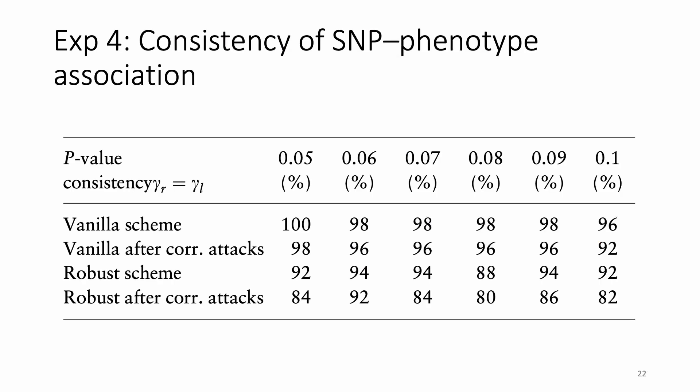In the fourth experiment, we show the consistency of the SNP and phenotype association in this table. The takeaway message is that our proposed vanilla fingerprinting scheme plus the mitigation technique can preserve high consistency of the association. However, if the robust fingerprinted database is subjected to the correlation attack, then the consistency will have a significant drop.